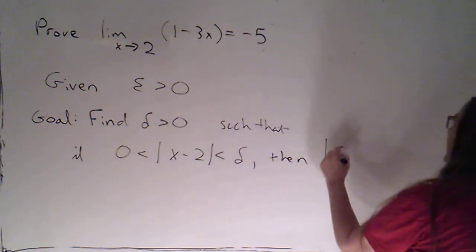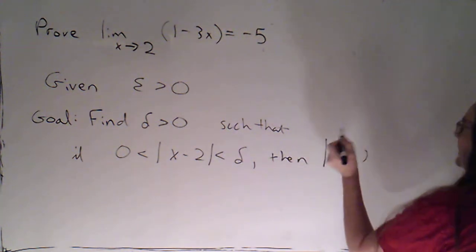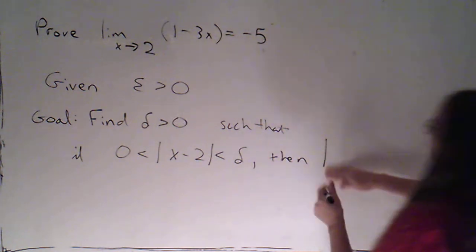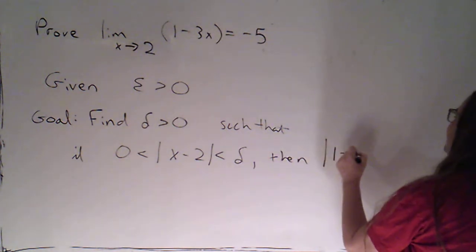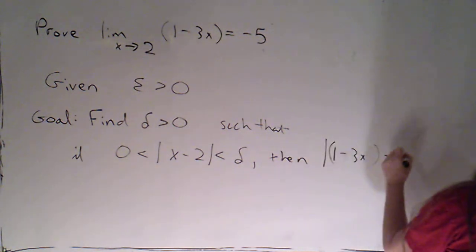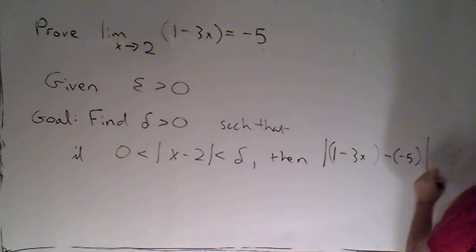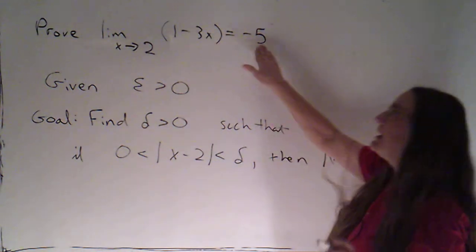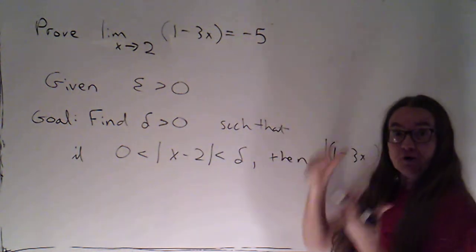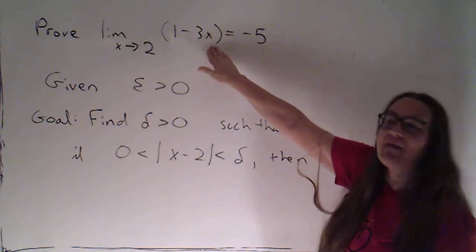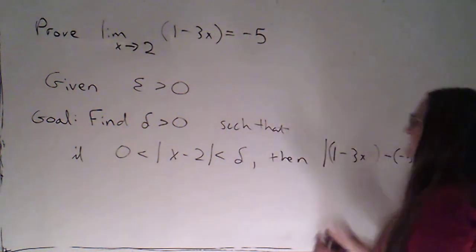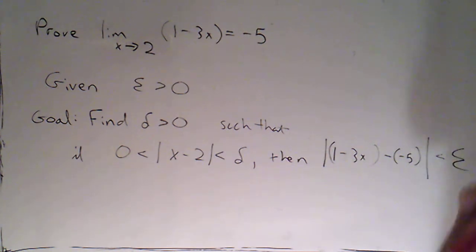then the absolute value of f of x—actually, I didn't give it a name, I gave it a formula—of 1 minus 3x minus a negative 5. So that's my function minus the limit. So that would be the vertical distance between the y value on that line and the y value that we're claiming is the limit, and I want that to be less than epsilon.